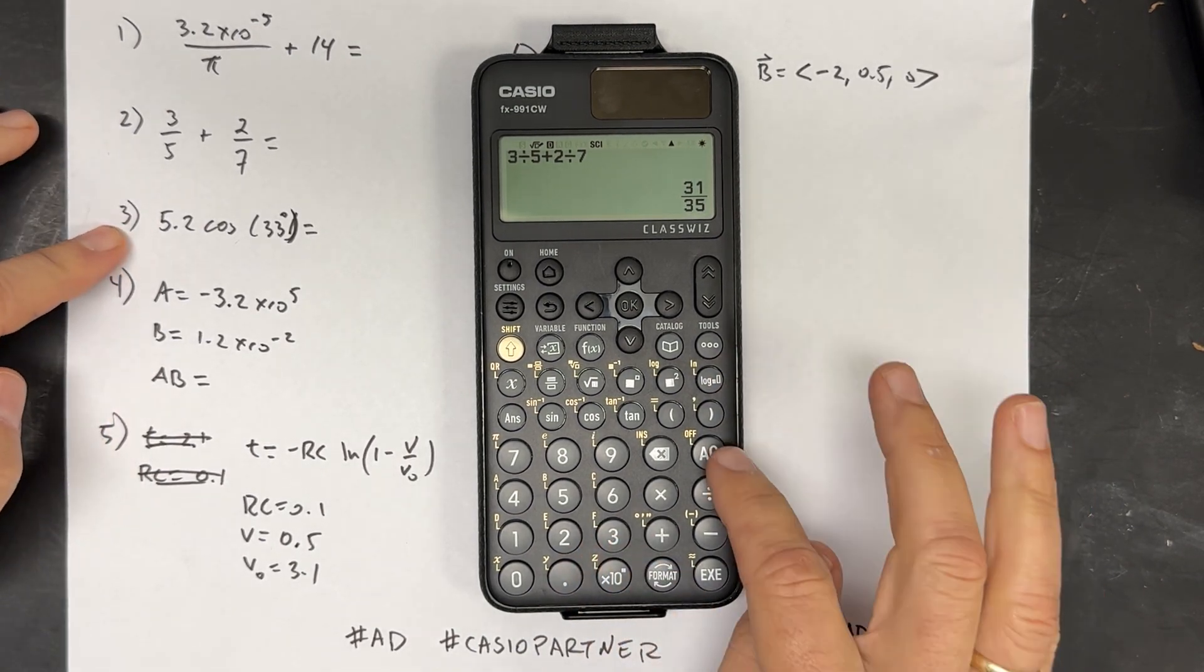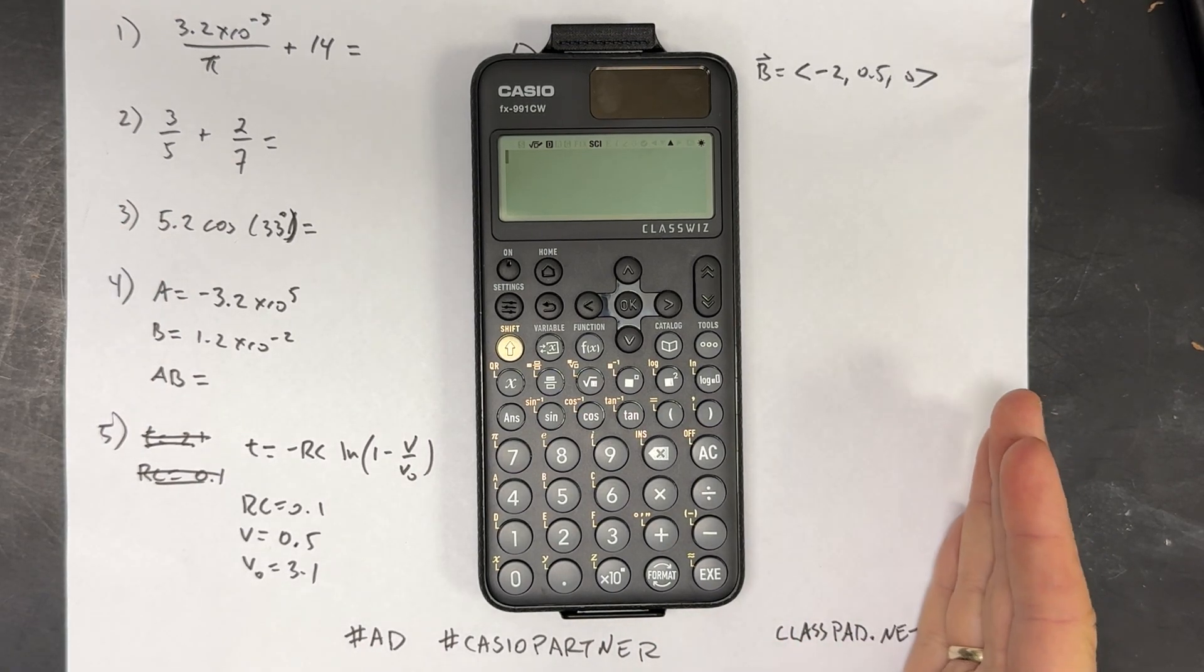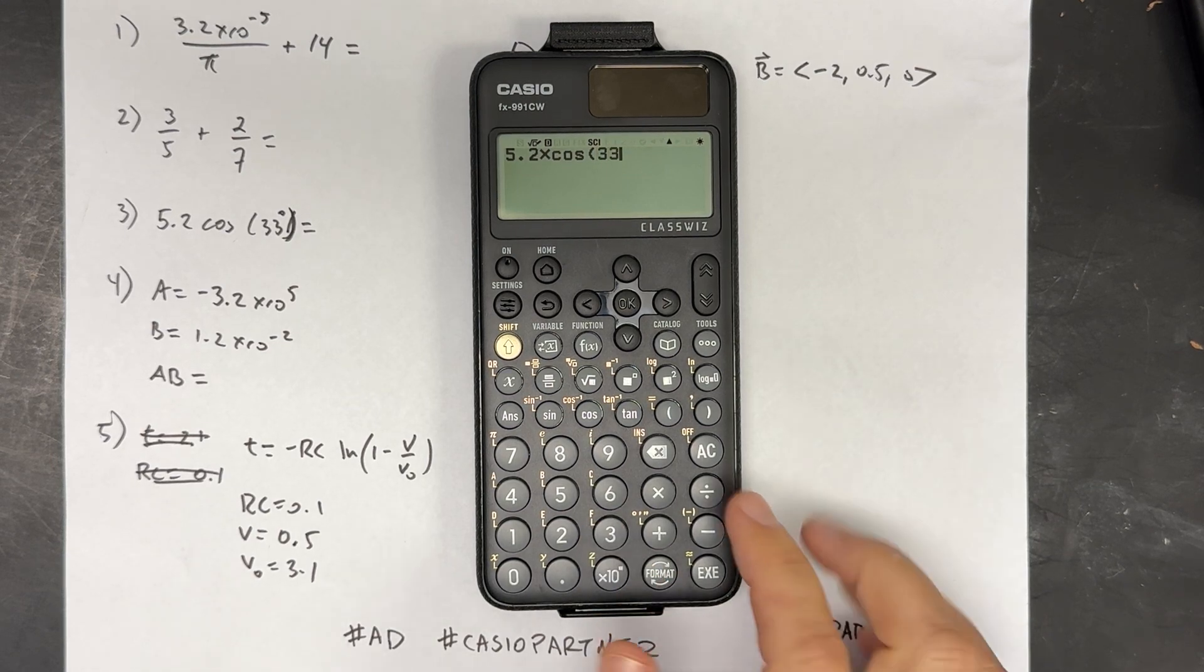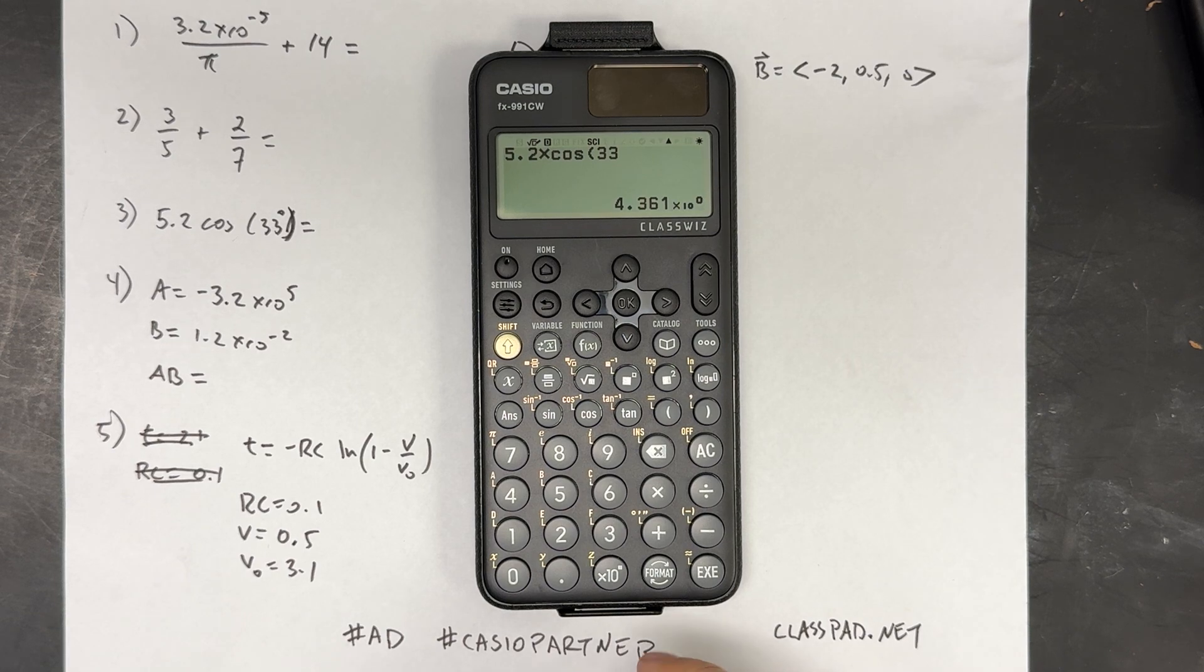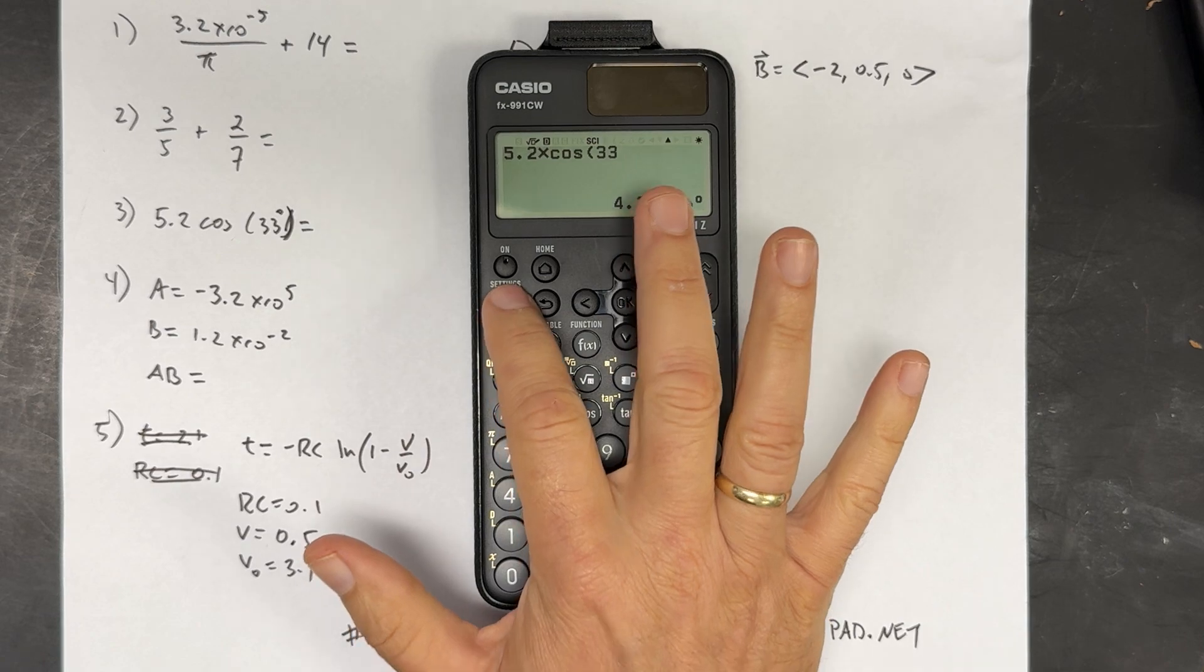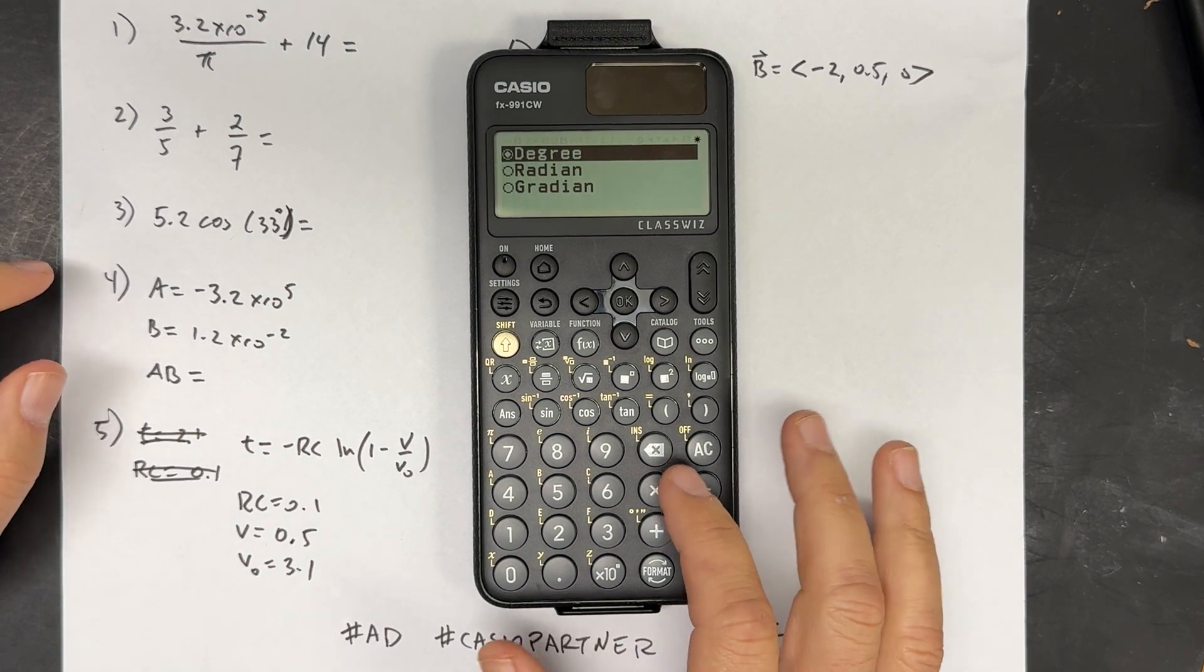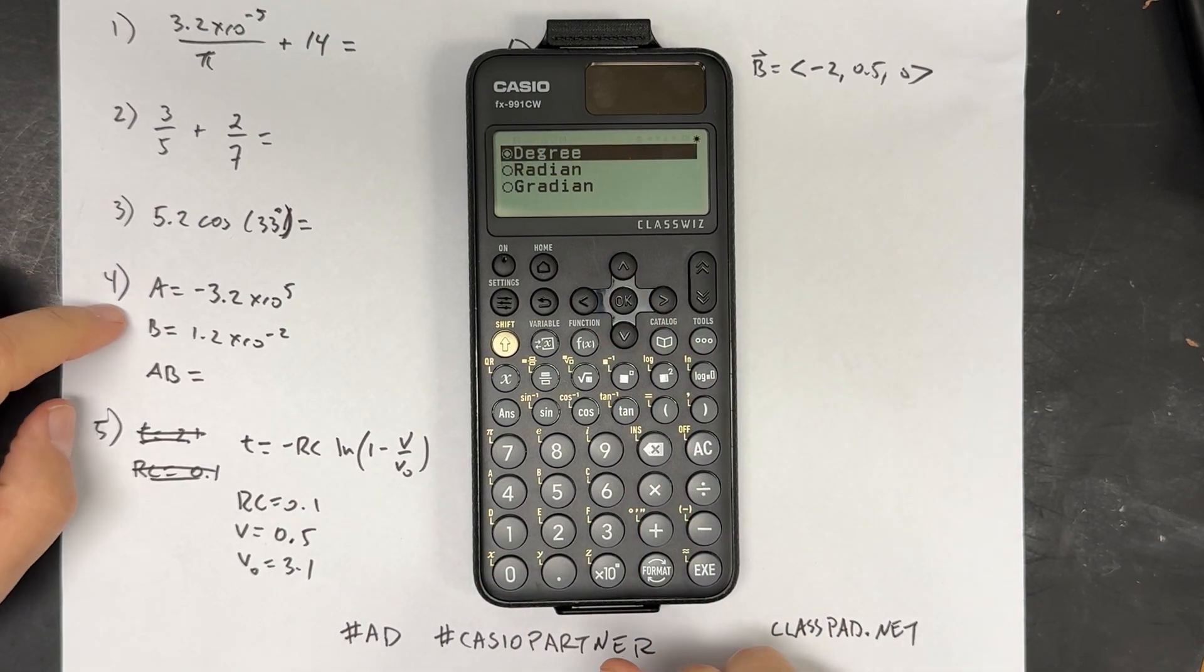Let's do the next problem. I'm going to clear. This is one using trig functions, which comes up a lot in physics when we're doing vector components. That's what that looks like: 5.2 times cosine 33. And you don't have to put the closed parentheses. I can just do it right there. And I'm actually not even sure if I'm in degrees or radians mode. Let's check settings, calc settings, angle unit. I am in degrees, so that's a good thing. If you need to do radians, you just go down there.